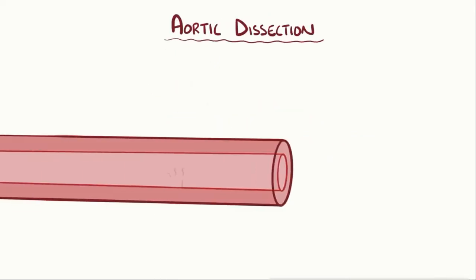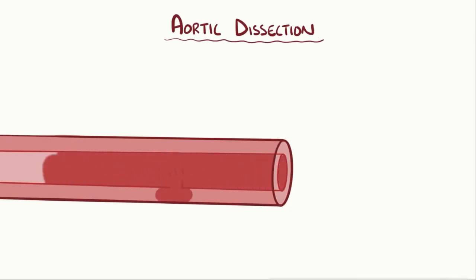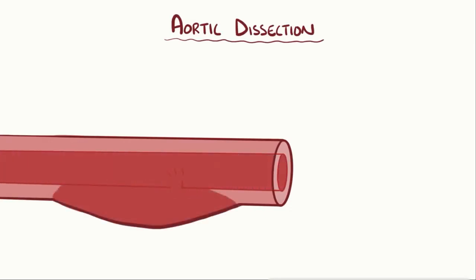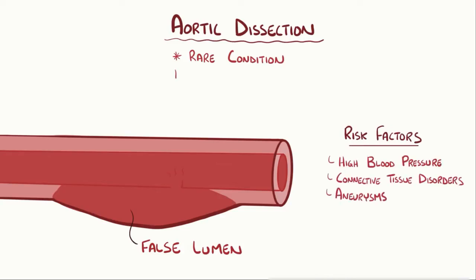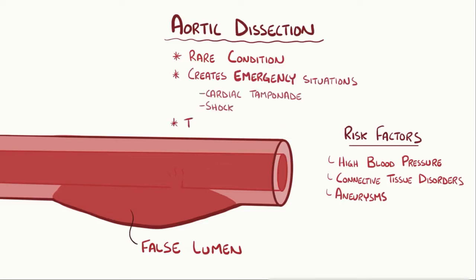Aortic dissection is where blood tunnels between the tunica intima and the tunica media, separating the two layers and creating a false lumen. This is a rare condition that most often happens in individuals with a history of high blood pressure, connective tissue disorders, and aneurysms. An aortic dissection can lead to emergency situations like cardiac tamponade and shock, and should be treated immediately.